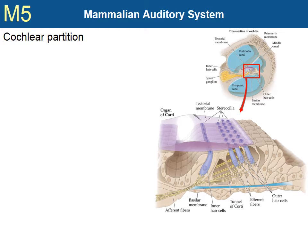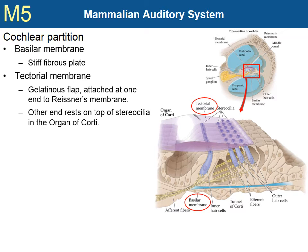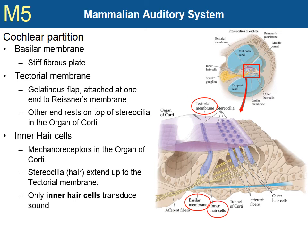The cochlear partition is an intricate and delicate piece of biological equipment. The basilar membrane is a stiff and fibrous plate that supports the partition. The tectorial membrane, shown in purple, is a soft flap — one end is attached to Reissner's membrane, and the other end rests on top of the stereocilia, which are actually embedded into the tectorial membrane. Finally, we have the inner hair cells, which are the transducers of sound. They are mechanoreceptors, meaning they respond when physically moved. Although there are both inner and outer hair cells, only the inner hair cells transduce sound.